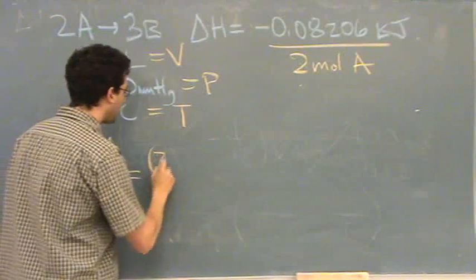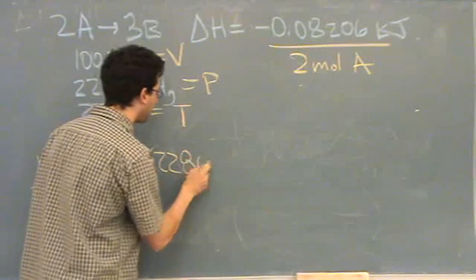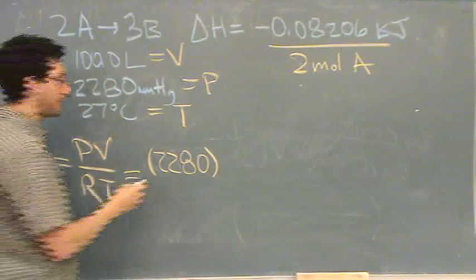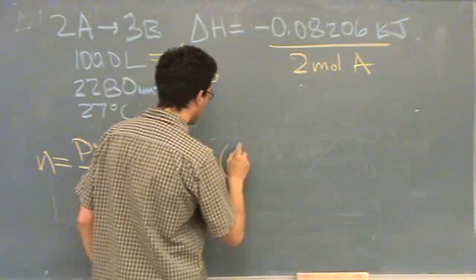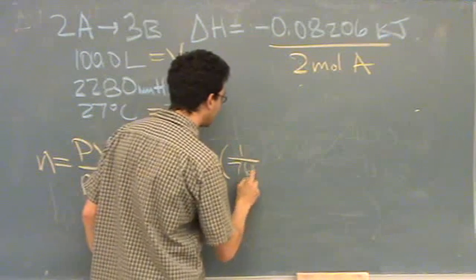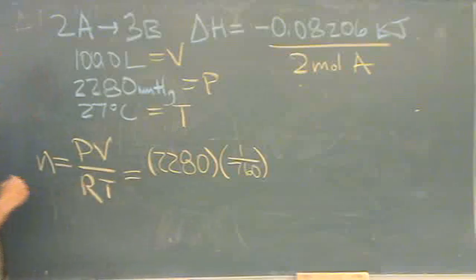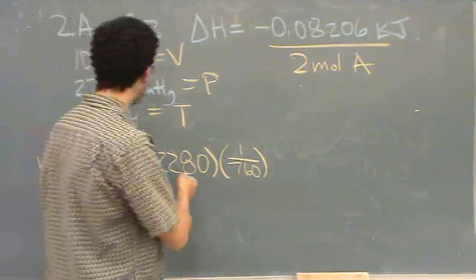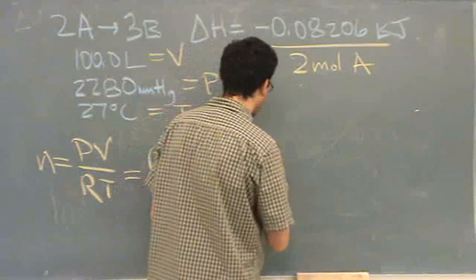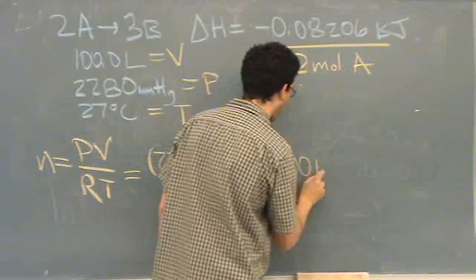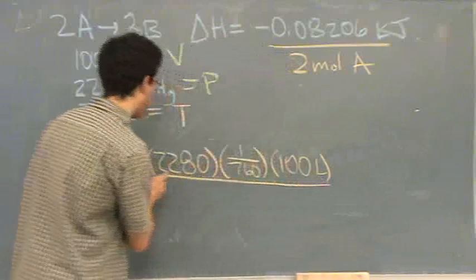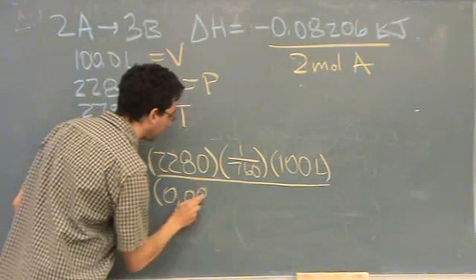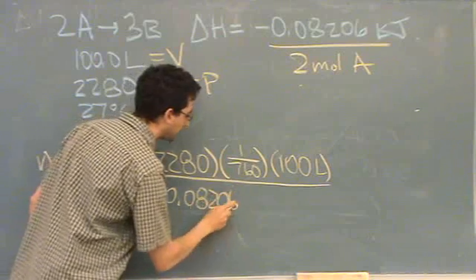N is PV over RT. P is 2280. Remember that I have to convert to atmospheres if I use the ideal gas law, so it's 1 over 760. It's a conversion. If you don't know that, it'll be given on the back of the test. So that's atmospheres times volume. It's in liters, so that's good.